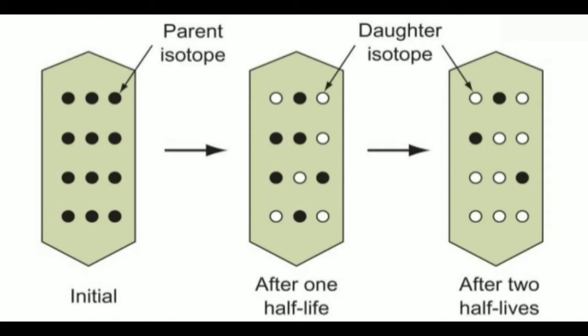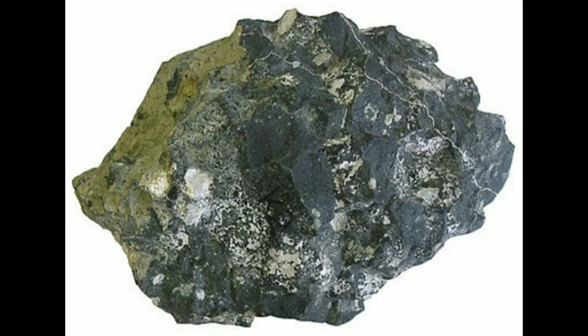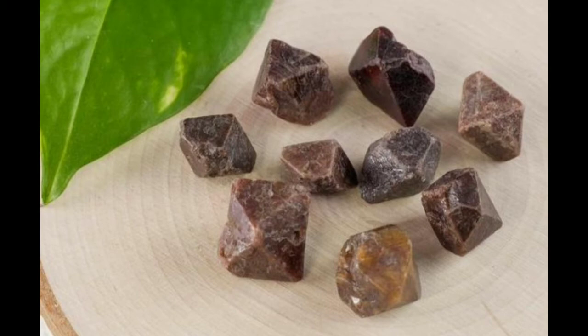Uranium dating is one of the oldest and most refined of the radiometric dating schemes. It can be used to date rocks that formed and crystallized from about 1 million years to over 4.5 billion years ago. The method is usually applied to zircon. This mineral incorporates uranium and thorium atoms into its crystal structure but strongly rejects lead when forming.